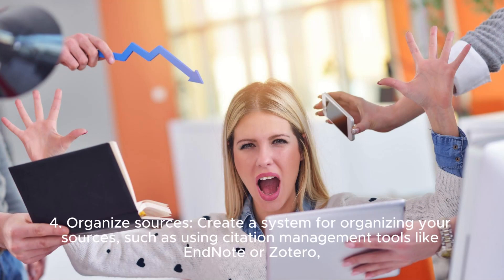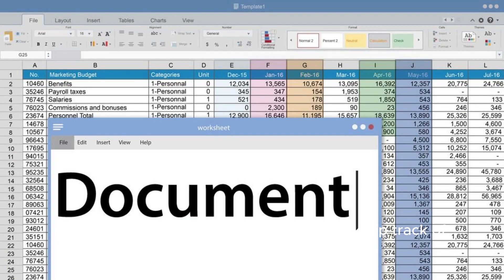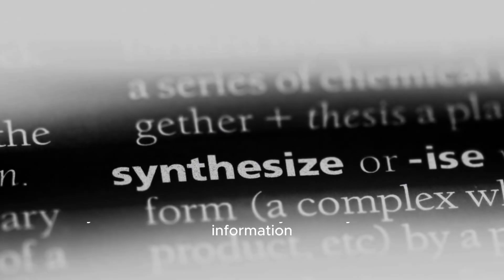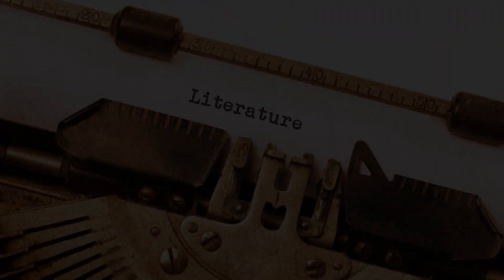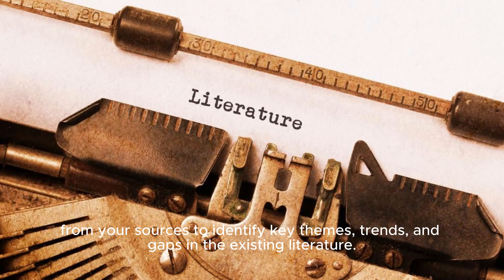Step 4: Organize sources. Create a system for organizing your sources, such as using citation management tools like EndNote or Zotero, or creating a spreadsheet or document to keep track of key information from each source. Step 5: Synthesize information. Analyze and synthesize the information from your sources to identify key themes, trends, and gaps in the existing literature.